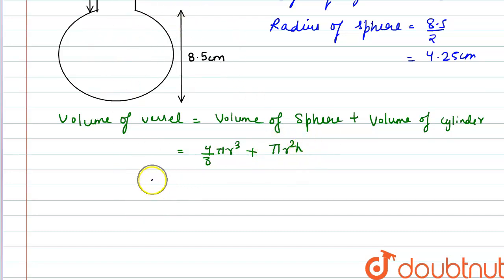So by substituting the values we have 4 by 3 into pi is 22 by 7 into r is 8.5 by 2 cube plus pi is 22 by 7 into r is 1, so 1 square into h is 8.